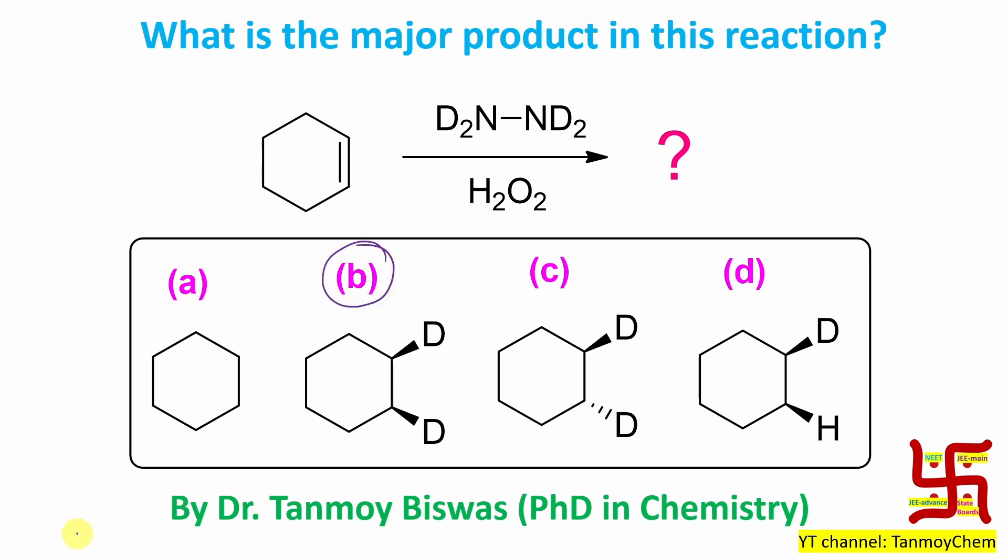Now if you get this question in your exam hall, how can you solve it in less than 30 seconds? For that purpose I'd suggest that students remember hydrazine. If you oxidize in terms of hydrogen peroxide it will produce the diamide and diamide undergoes addition reaction in one step means cyclic transition step to the double bond.